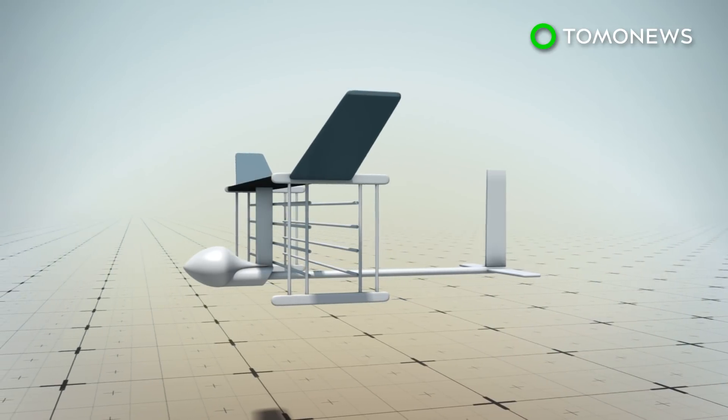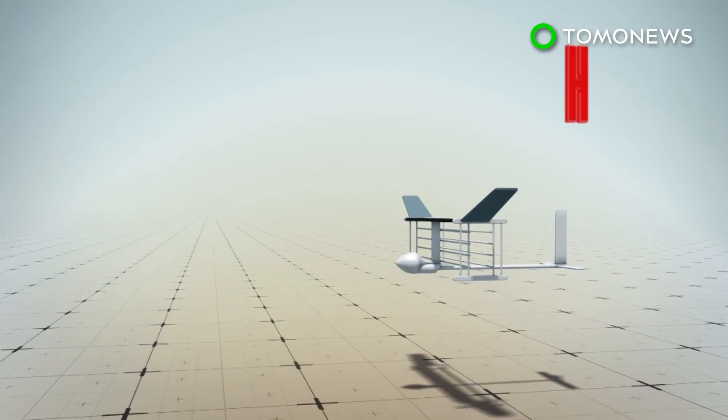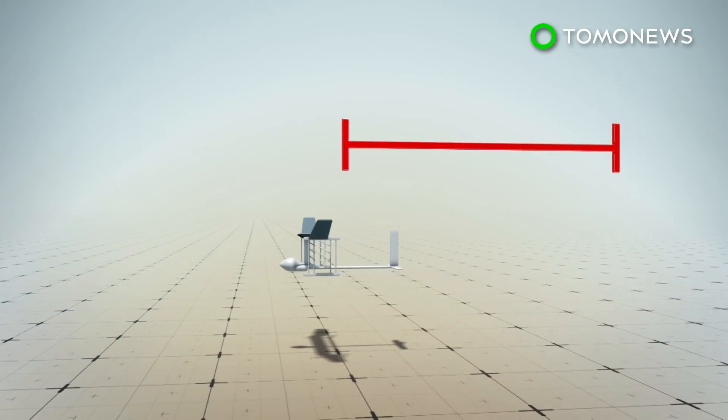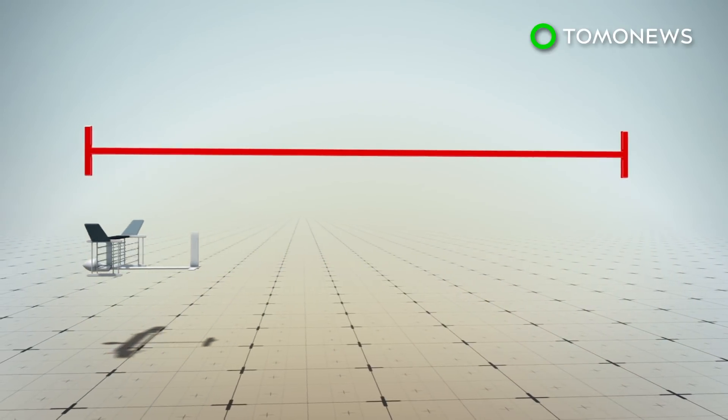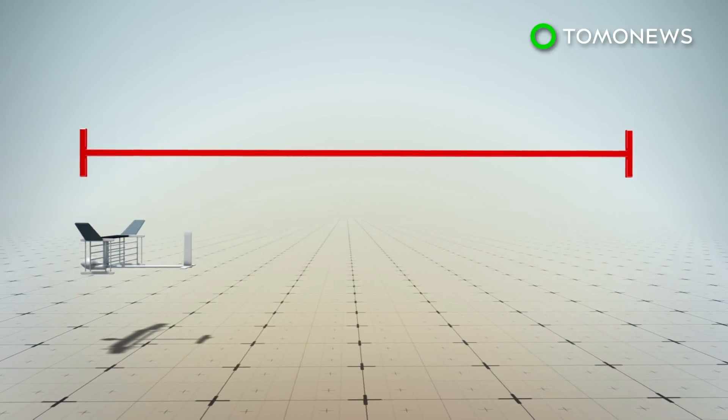According to their study, published in the journal Nature, the team tested the glider inside a gym where it managed to sustain flight and travel 60 meters, making it the first solid-state flight or flight without moving parts.